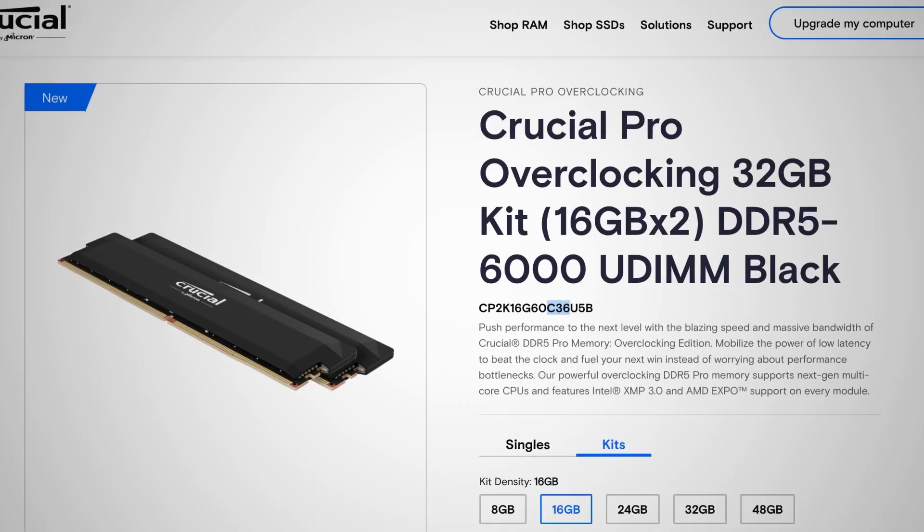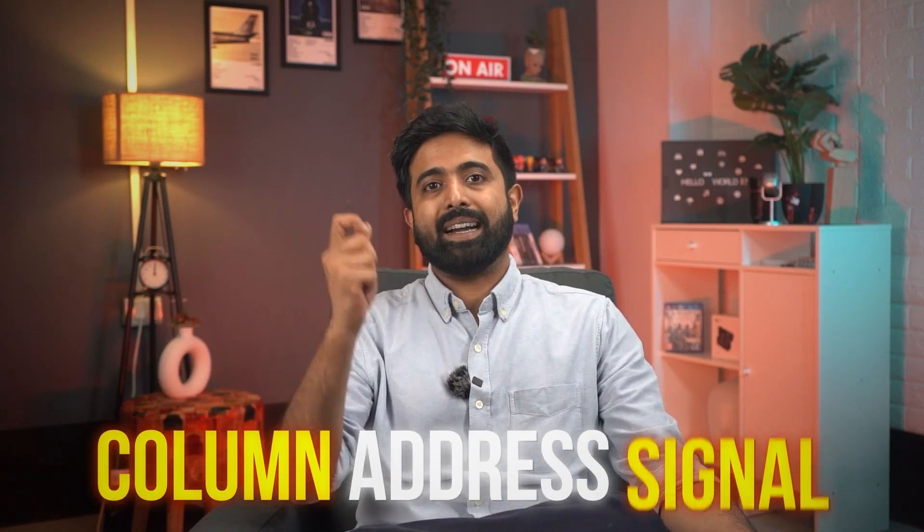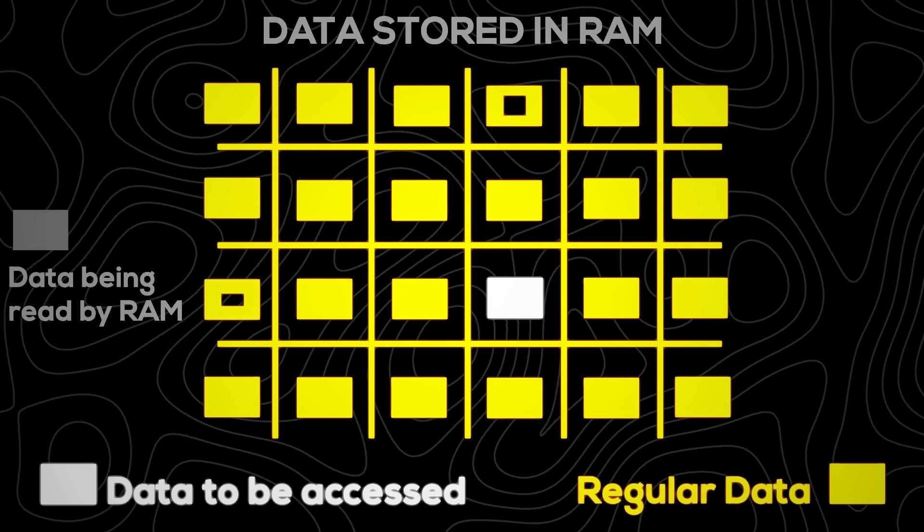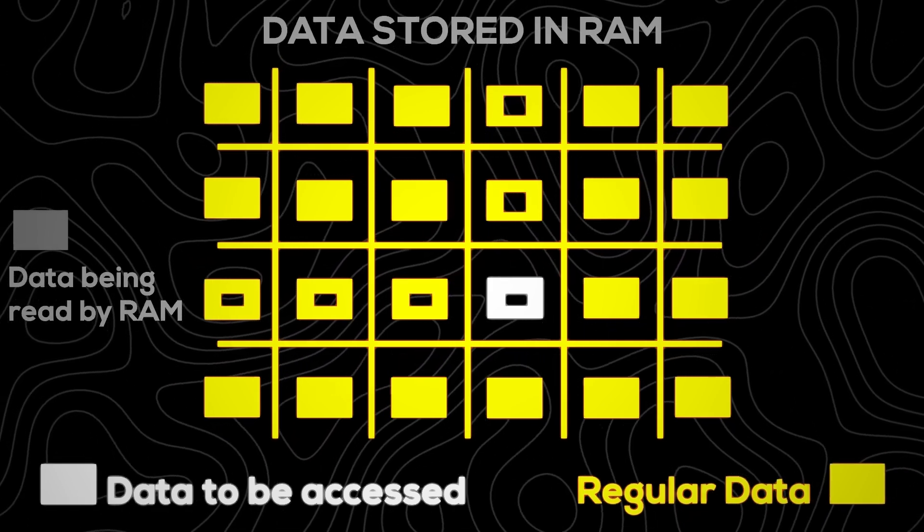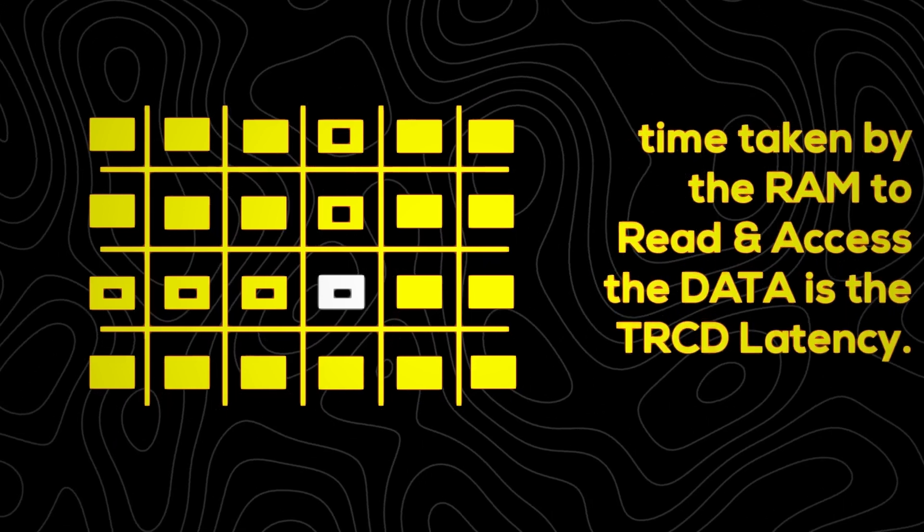There's one more factor that is equally important but almost everyone overlooks — it's called RAM latency. If you look closely at your RAM's model name, you'll see a number just after the 'C'. This is the CAS (Column Address Signal) latency, which determines how fast a RAM can respond to a data request. Visualize it like an Excel sheet: each clock cycle, whenever your CPU requests data, the RAM needs to search through all the rows and columns, creating a slight delay.